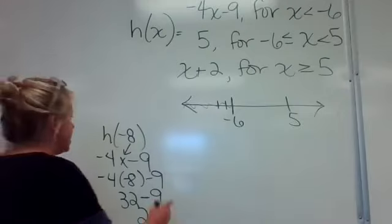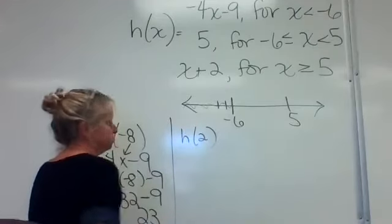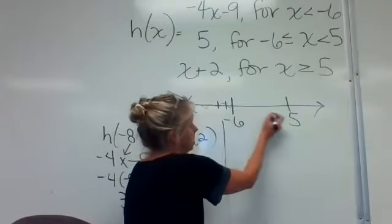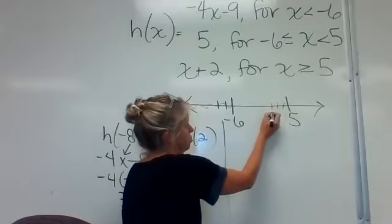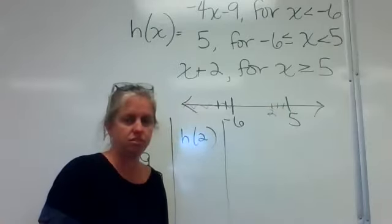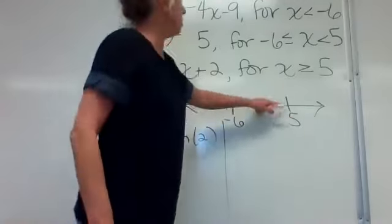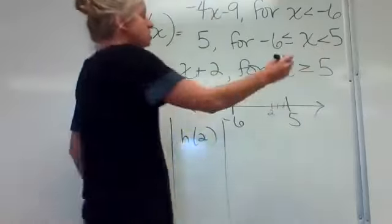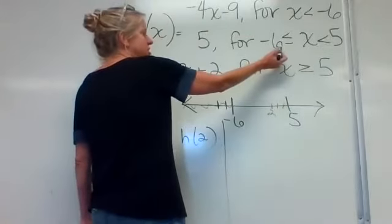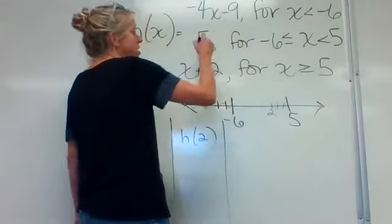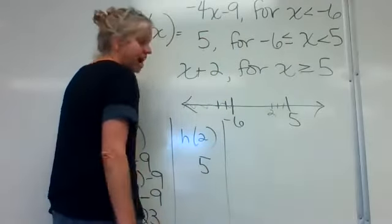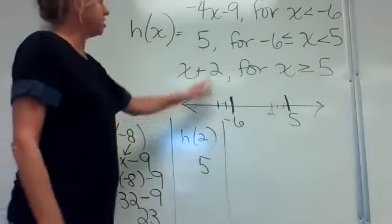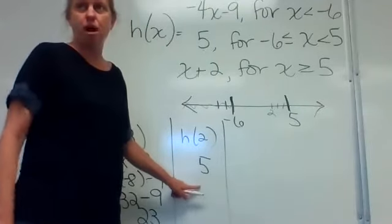The next thing is h of two. On the number line, two would be between negative six and five, which is the middle part. When I look at its piece, it is just plain five — there's not even an x to plug in. If you are between negative six and positive five, then every single answer for those problems is just five.